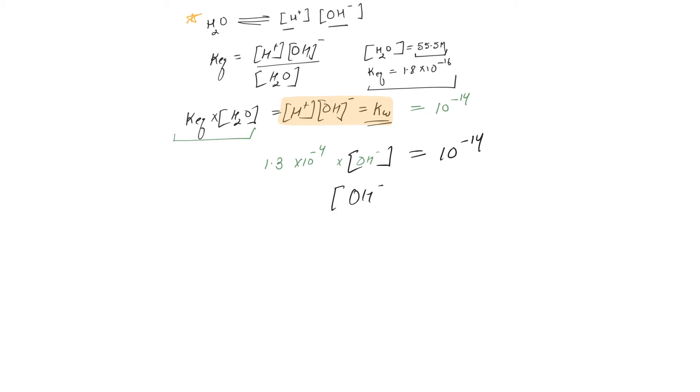OH minus ion concentration equals 10 to the power minus 14 divided by 1.3 into 10 to the power minus 4. And if you do the math, that comes out to be 7.7 times 10 to the power minus 11 molar.